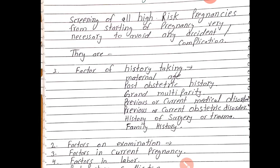Then history of surgery and trauma — us patient ki koi surgery ya trauma se related history ho jaise myomectomy (removal of uterine fibroid), ya metroplasty jaise repair of congenital anomaly of uterus, and repair of third degree perineal tear, ya vesicovaginal fistula repair — in sab ki history bhi lenge patient se.